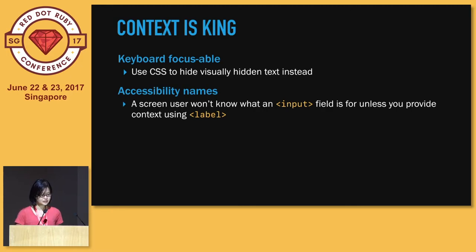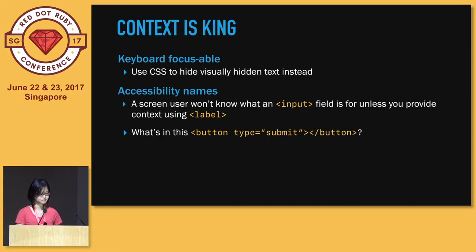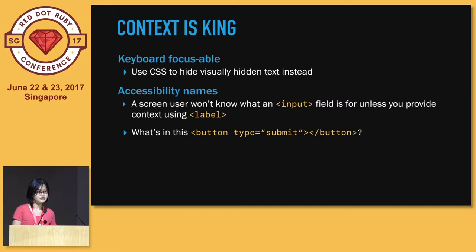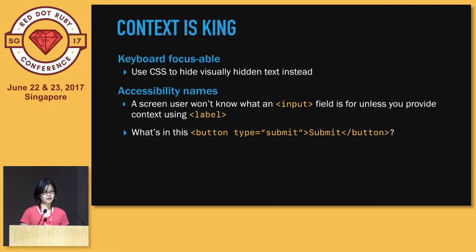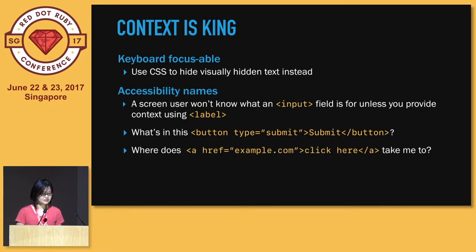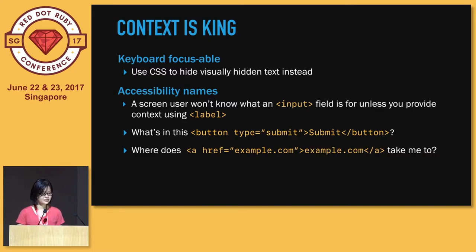A screen reader won't know what an input field is for unless you also give it an associated label. For example, if you have a sign-up form, having a label 'first name' for the input field will cause the screen reader to properly say 'first name, edit text.' Without a label on a button, the screen reader will simply say 'button,' even if visually you can see the word 'submit.' Add the word submit so that the screen reader will say 'submit button.' And for a link, make sure it has descriptive text rather than just 'click here' — it should say something like 'example.com.' Much better.